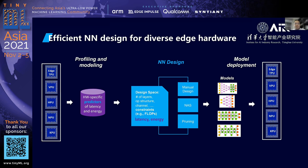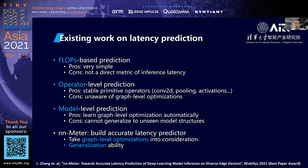To solve this problem, we propose doing some offline profiling — for each hardware, we build a predictor that, given a model architecture, can tell us the latency or energy cost on that particular hardware. This kind of latency prediction is not a new problem. Previously, people have proposed FLOPs-based prediction, which is not very accurate, as well as operator-level and model-level prediction approaches, which are also inaccurate or cannot generalize to all models. So we conducted work called AIM meter to build an accurate latency predictor.